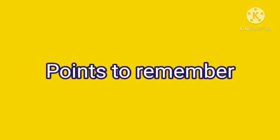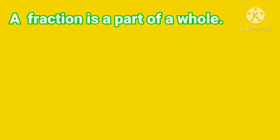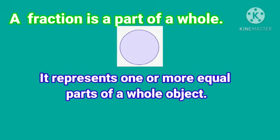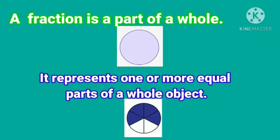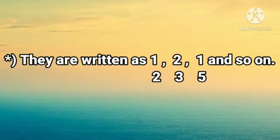Points to remember: a fraction is a part of a whole. It represents one or more equal parts of a whole object. You can see in the picture here. Fractions are written as 1 upon 2, 2 upon 3, 1 upon 5, and so on.